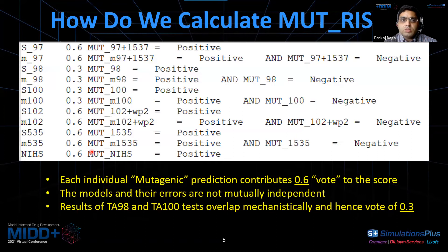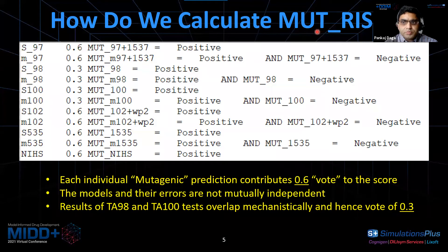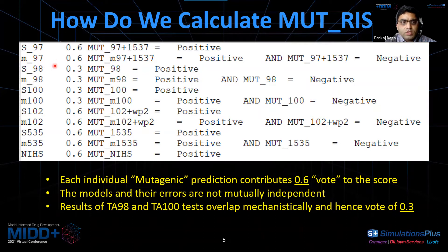How do we calculate MuteRisk? Each individual mutagenic or positive prediction contributes 0.6 worth to the MuteRisk. TA98 and TA100 have been shown to have mechanistically overlapping results, so we have allotted them only 50% of this 0.6 — so it is only 0.3 worth each.